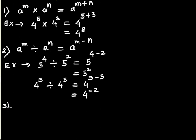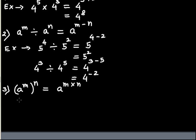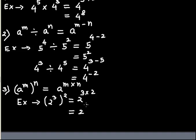The 3rd law is the power to power law. If a to the exponent m has one more exponent outside the parenthesis, then you have to multiply the two exponents. For example, if you have 2 to the exponent 3, all raised to the exponent 2, then 2 to the exponent 3 times 2 gives 2 to the exponent 6.